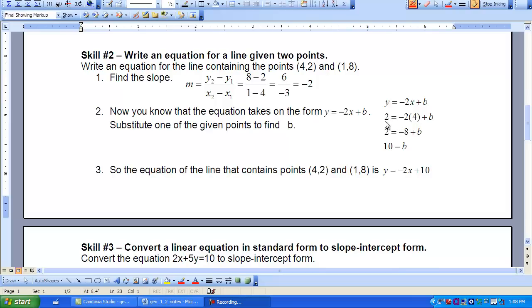So if we plug that in, bring down the 2. Negative 2 times 4 is negative 8 plus B. So now then I can use my simple algebra skills. Move the 8 over. 2 plus 8 is 10. So I know B is 10 or that is my Y intercept.